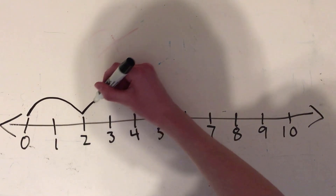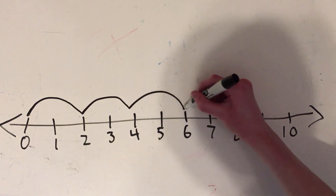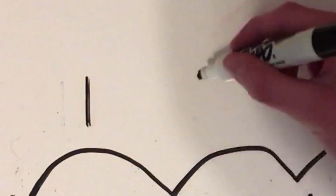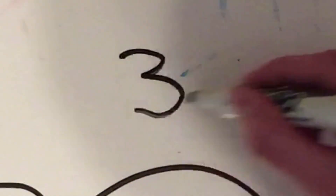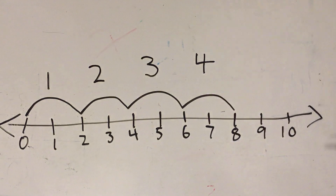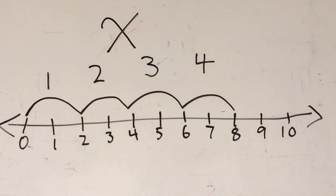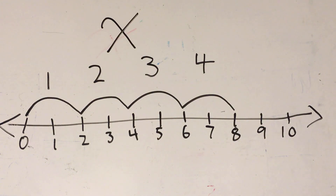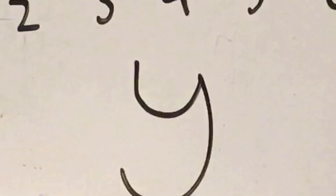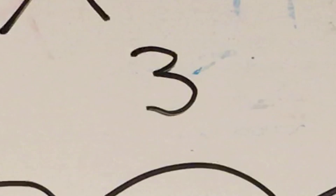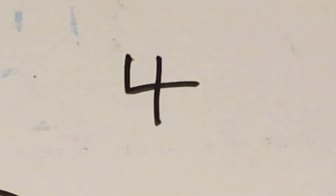Now let's draw this out on a number line: 2, 4, 6, 8. Now let's count the number of jumps we've just made: 1, 2, 3, 4. Let's name these numbers by the 24th letter of the alphabet, X, and let's name the numbers we've been skip-counting by the question I ask myself every day in the mirror — Y. For every number X increases by, Y increases by 2.